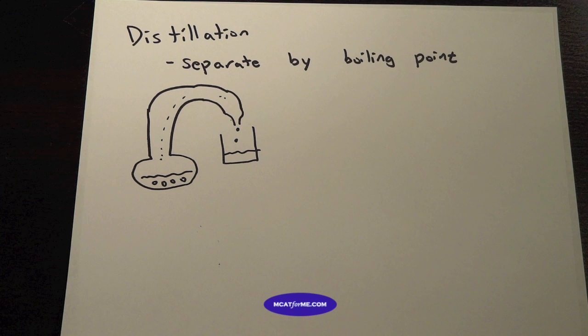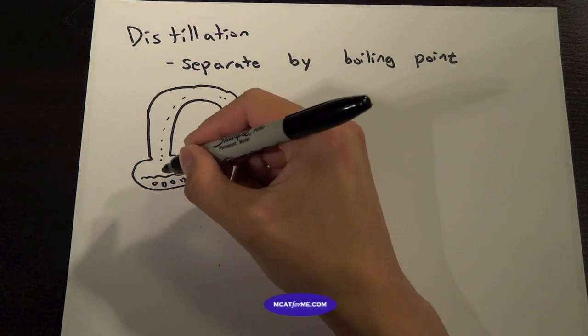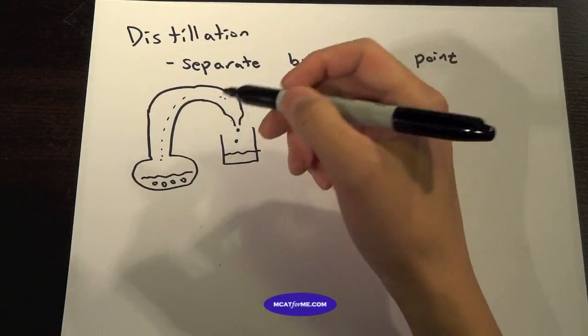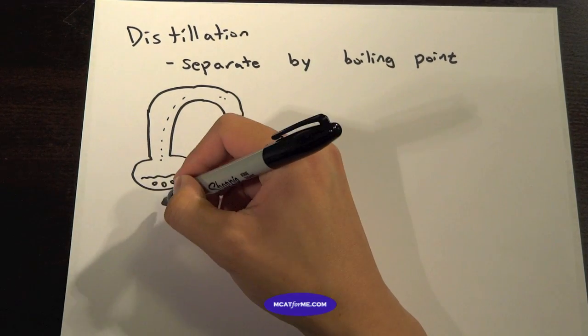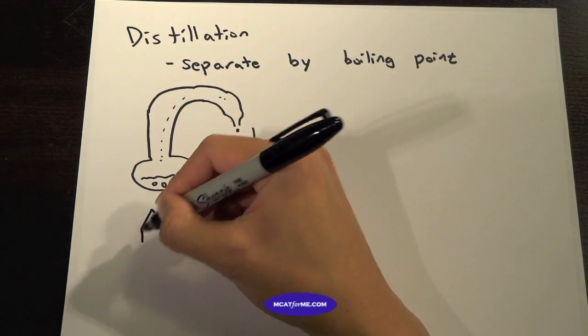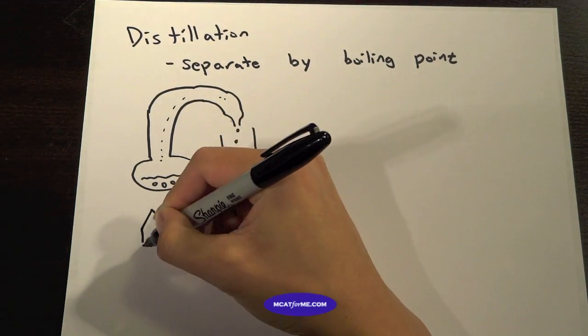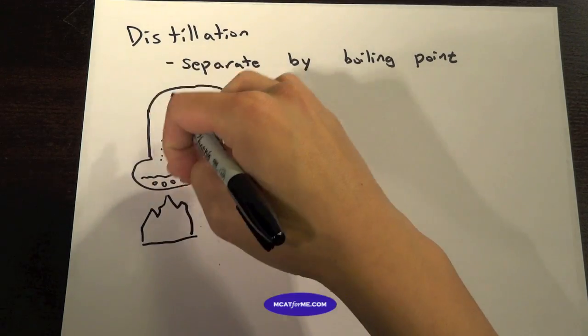And so the final one that we're going to look at is distillation. We're separating by boiling point. And there's different types of distillation, but how it works is we have this tube. I think you guys remember it from OChem Lab. You have your liquid down here. You start boiling it. So you have this little flame going. It starts boiling this liquid.